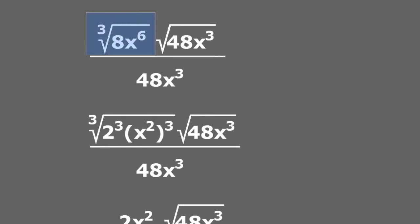What I do is, first, on the cube root, I rewrite the 8 as 2 cubed. 2 cubed is the same thing as 8. So the 8 becomes 2 cubed. And x to the sixth power becomes x squared, raised to the third power — basically x squared cubed. If you want to verify, you multiply the exponents and you get back x to the sixth power. So x to the sixth power and x squared cubed are both equivalent.